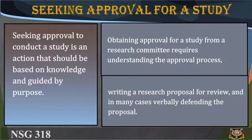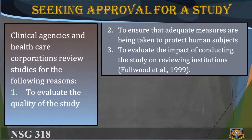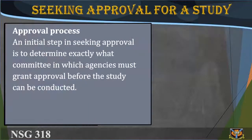Seeking approval for a study: Seeking approval to conduct a study is an action that should be based on knowledge and guided by purpose. Obtaining approval from a research committee requires understanding the approval process, writing a research proposal for review, and in many cases verbally defending the proposal. Clinical agencies and healthcare corporations review studies to evaluate the quality of the study, ensure that adequate measures are in place to protect human subjects, and evaluate the impact of conducting the study on the reviewing institution. An initial step in seeking approval is to determine exactly which committee in which agency must grant approval before the study can be conducted.